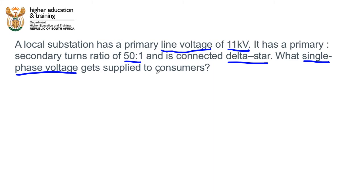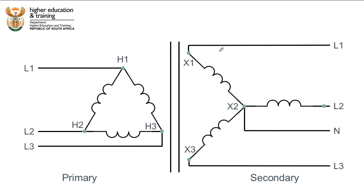Let's draw a picture of what is going on here. With these three-phase transformer questions, it's really important that you draw yourself a diagram. Here I've got the diagram already set up. They told us it was a delta-star configuration — the primary side is connected in delta and the secondary side is connected in star or Y formation.